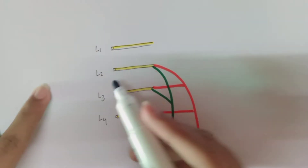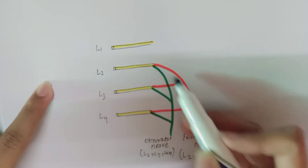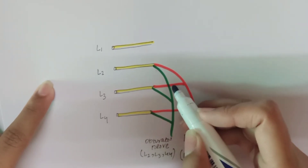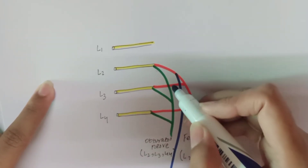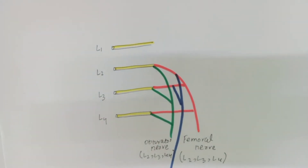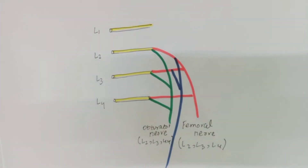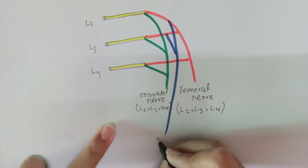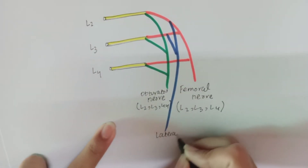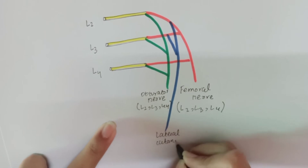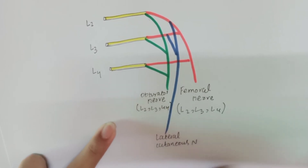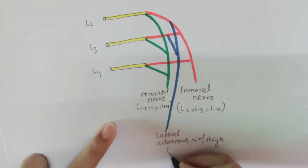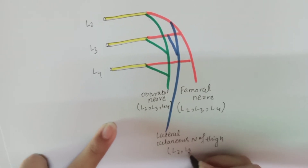From L2 and L3, the dorsal division gives rise to a cutaneous nerve known as the lateral cutaneous nerve of the thigh. Its root values are L2 and L3.